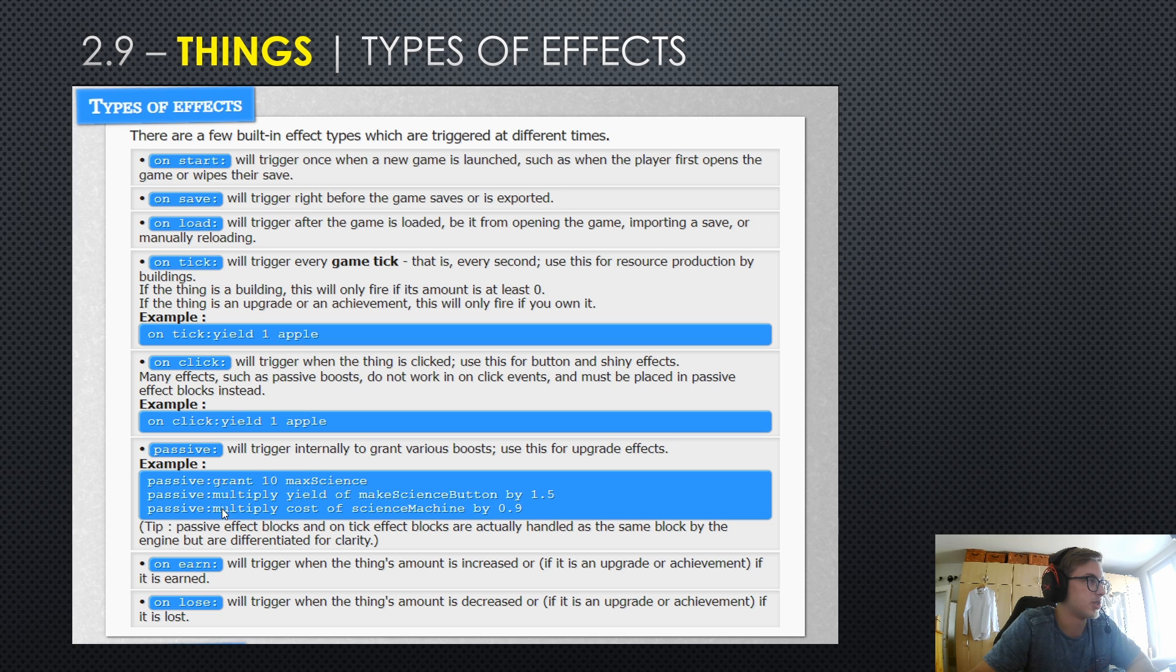Here we have some examples. For example, you can have an upgrade grant you 10 of a resource. You can have an upgrade multiply the yield of some kind of button, or maybe multiply some cost, maybe multiply a yield of a building. Basically all sorts of interesting things are possible with the passive effect.